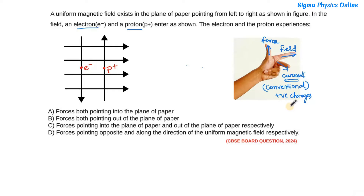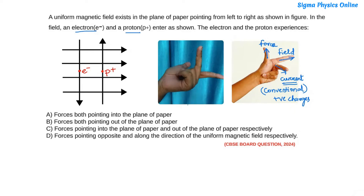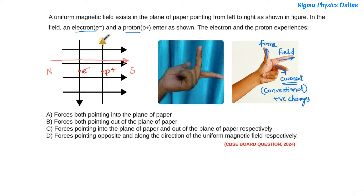Now let us interpret this question using Fleming's left hand rule by first understanding the diagram. The four arrows pointing to the right show the direction of the magnetic field — magnetic lines go from north to south, so the north pole is on the left and the south pole is on the right. The positive charge, the proton, is moving upward, so the conventional current flows in the upward direction.